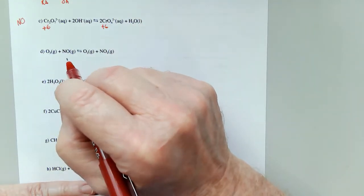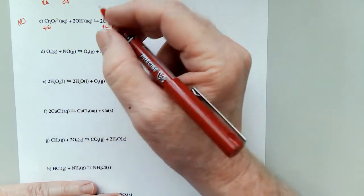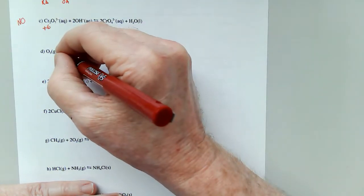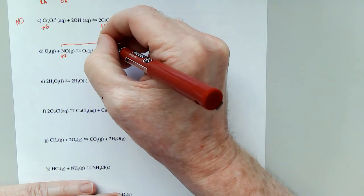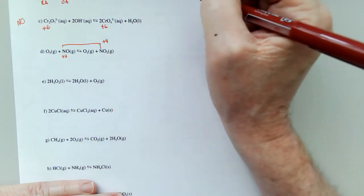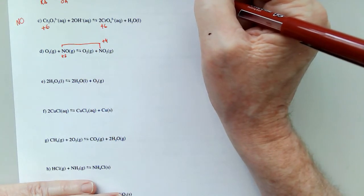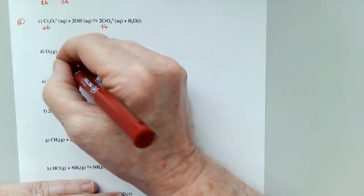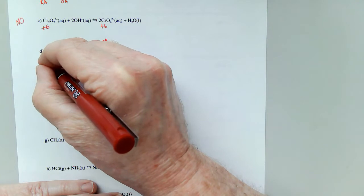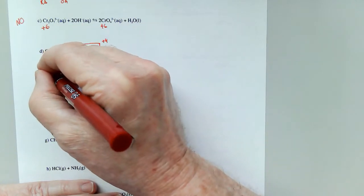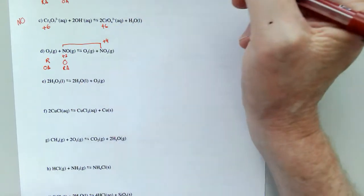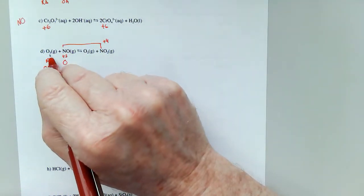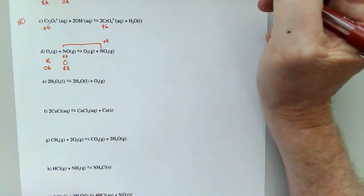Now, here in D, this nitrogen oxygen is going from a plus two to a plus four. That means it is losing electrons. It's oxidized, which means this is reduced. This is the oxidizing agent. This is the reducing agent, and it should make sense that anything with this much oxygen would be an oxidizing agent.